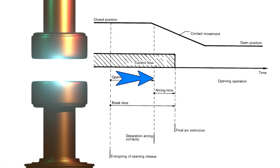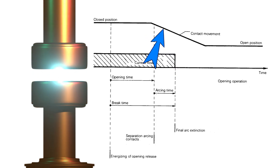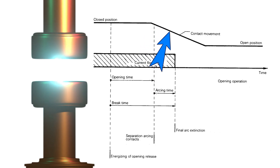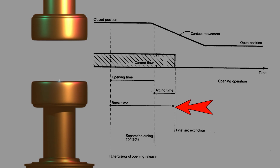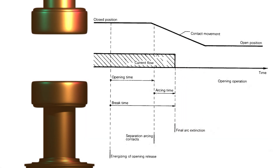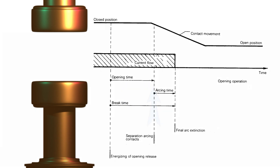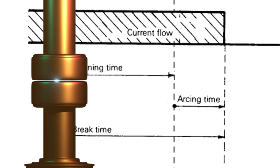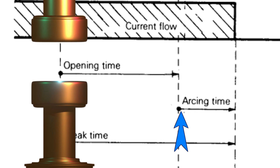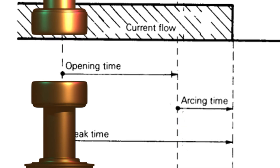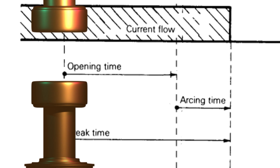After physical separation, the contact is still moving backward from the fixed contact and the contact gap is increasing. This inclined line indicates the movement of the moving contact away from the fixed contact. After a certain distance, say at that instant, the arc finally extinguishes — that means the current is finally interrupted. So this is the opening time, which means the time between energizing the opening release and the physical separation of the contacts. And this is the arcing time, which is initiated as soon as the moving contact gets separated from the fixed contact and the arc starts, to the final instant when the arc is finally extinguished.